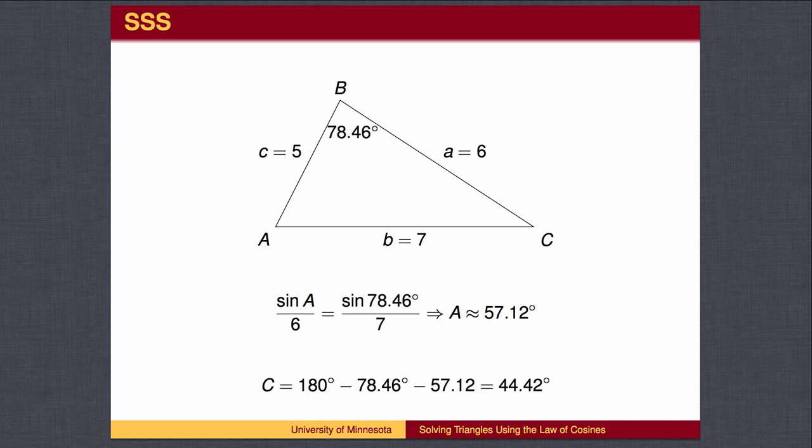Also note that originally, we found the angle across from the longest side. This ensures that if there is an angle greater than 90 degrees, we will find it using the Law of Cosines.